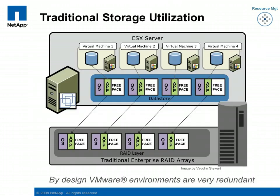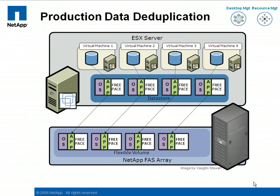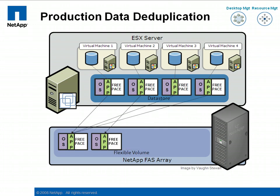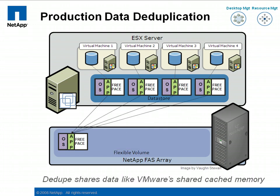Let's look at the impact of D-DOOP within a VMware virtual infrastructure. By default, virtual machines are very redundant. The commonality between virtual machines is by design, as companies have standard configurations for their servers and applications. By moving VMware to NetApp or N-Series arrays from IBM, the storage array is able to return all of the storage consumed by anything that has been installed on more than a single virtual machine.